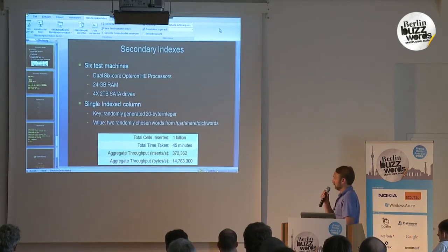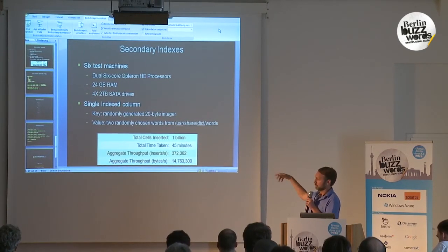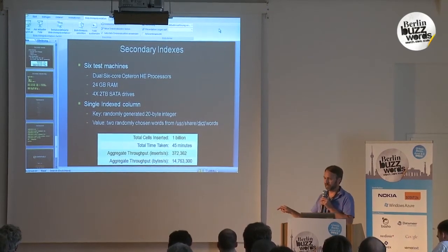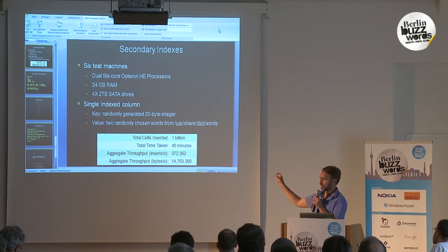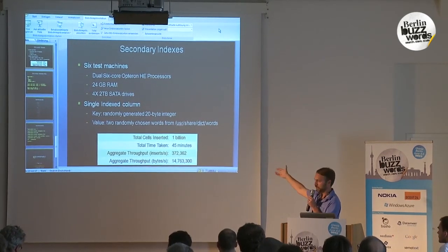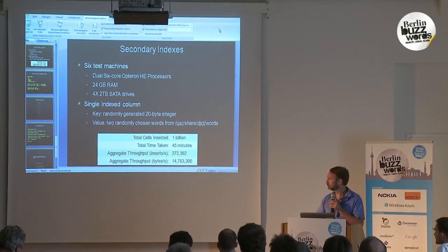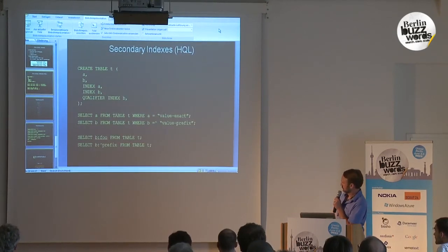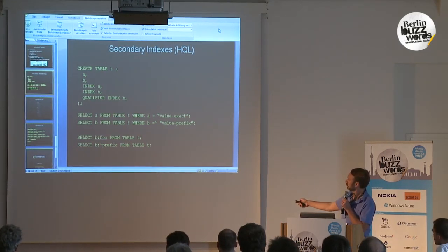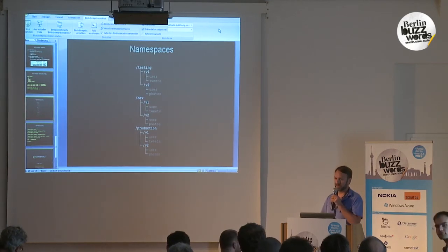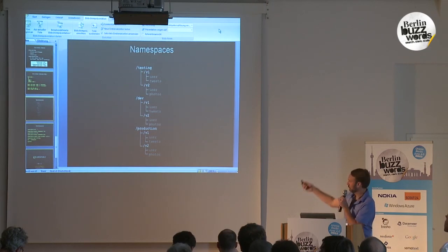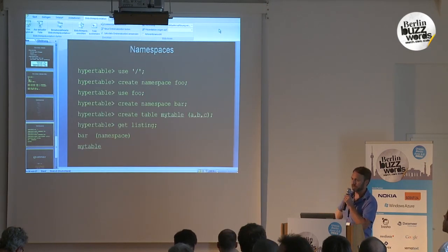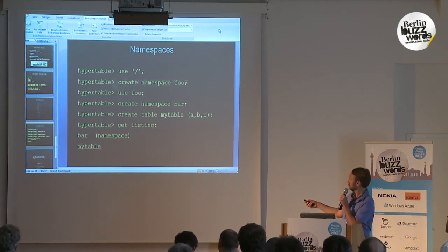We recently added secondary indexes, also a very high-performance implementation — updating a secondary index involves no random disk access. We created a table with one secondary indexed column, inserted a billion cells, and were able to do that in 45 minutes. Here's some HQL showing how to create a table with secondary indexes. Another nice feature is namespaces, similar to directory hierarchies, which allows you to organize your tables in a hierarchical fashion.